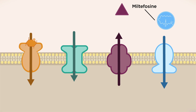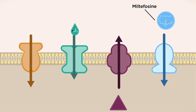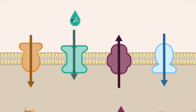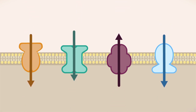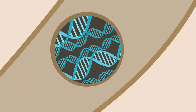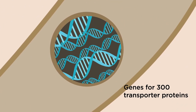These gateways can also be used to administer drugs, such as milteficin, to kill leishmania. From studying the genome, we know that leishmania can make around 300 different transporter proteins.